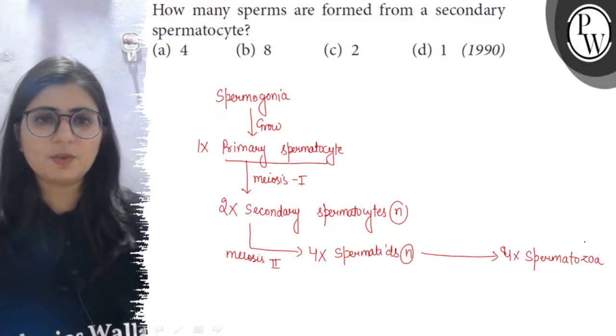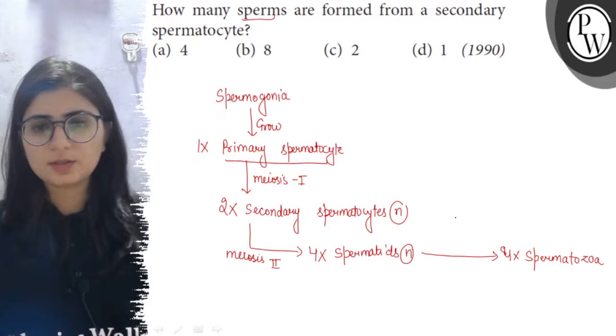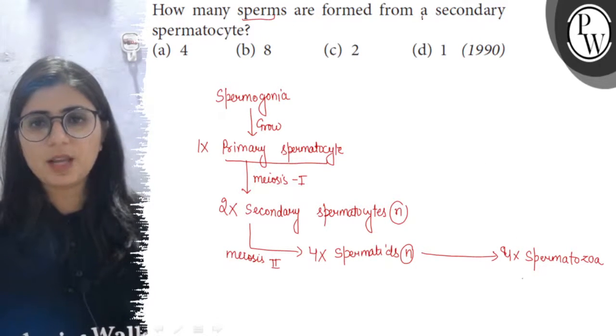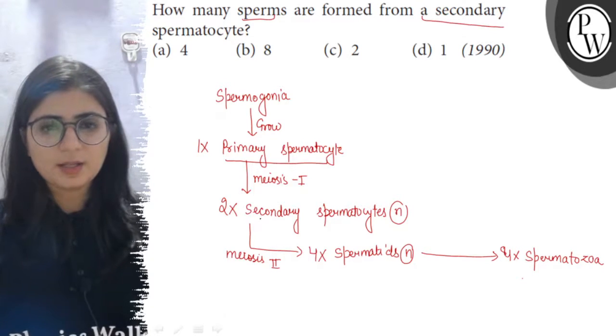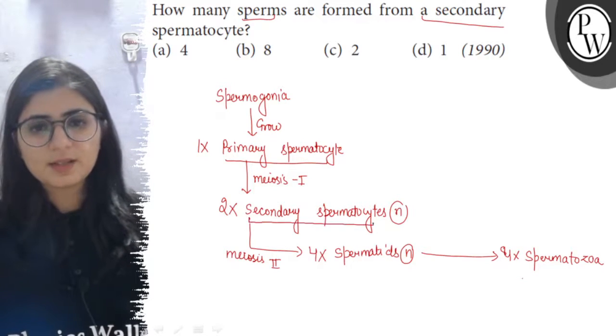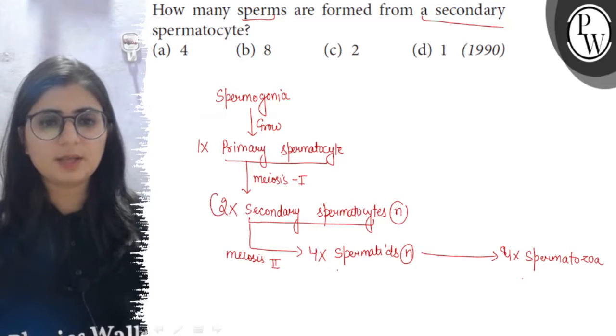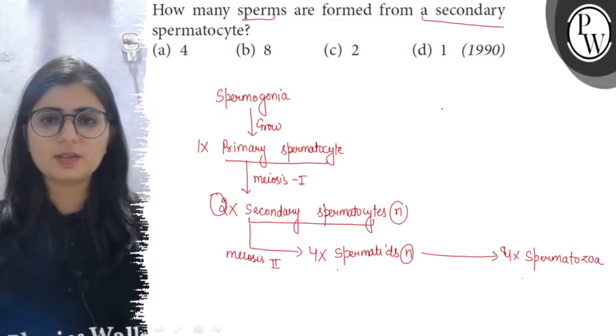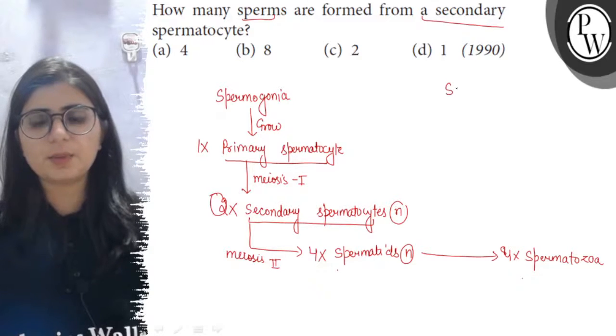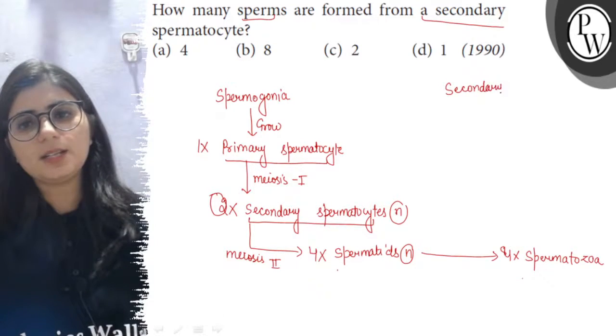So now if we see the question, how many sperms are produced from a secondary spermatocyte? So here one secondary spermatocyte, it means two spermatids as we are multiplying it with two. If we look at the case of a single secondary spermatocyte, then each secondary spermatocyte